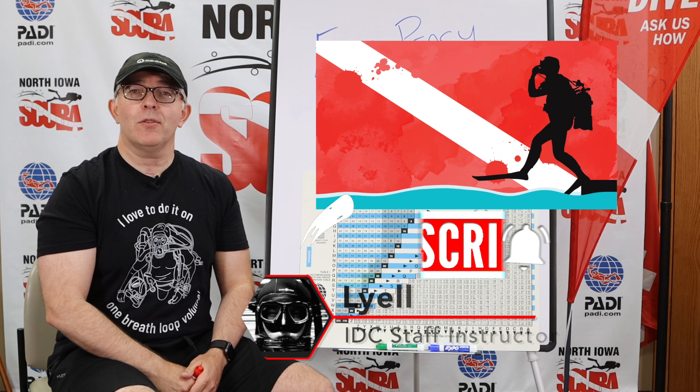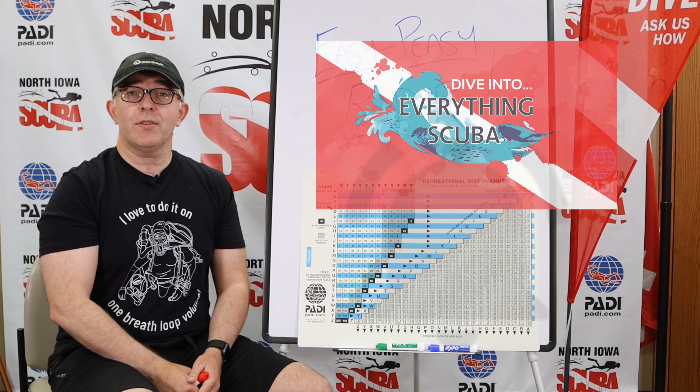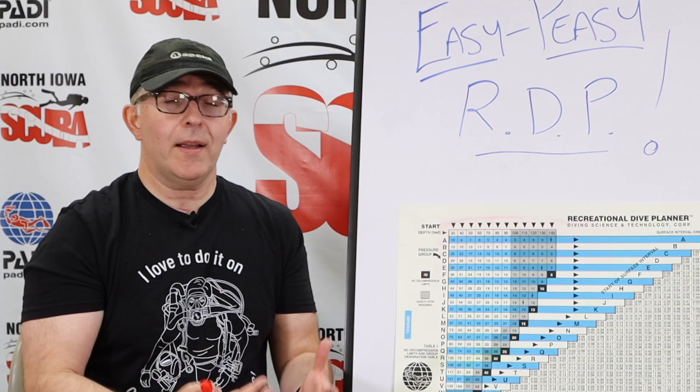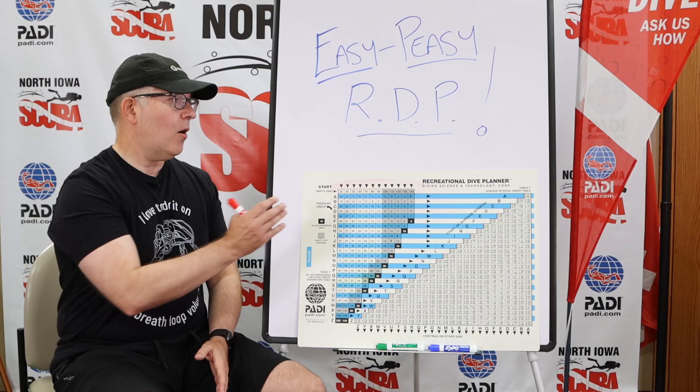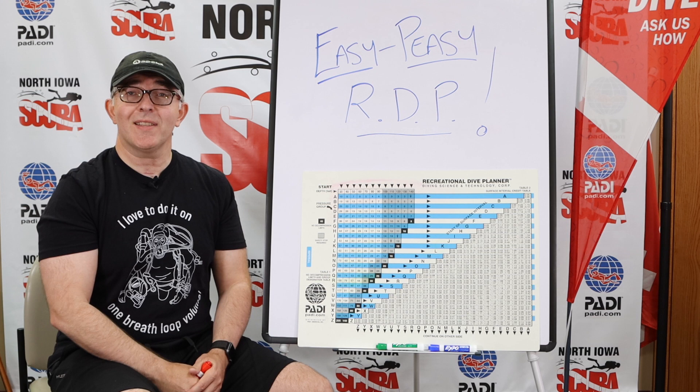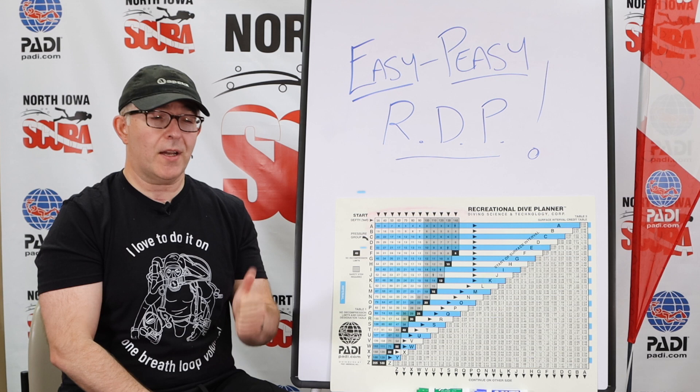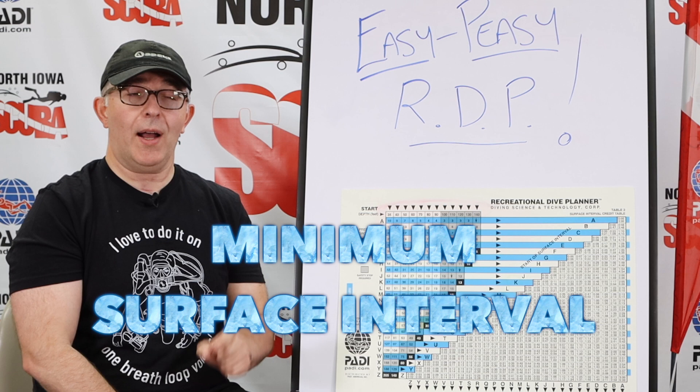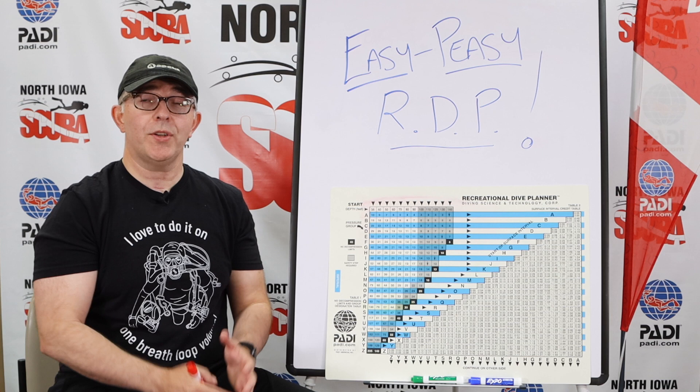I am Lyle. This is part three of our RDP series that we've put together for new divers or divers who are struggling to learn their RDP. You're going to be asked lots of questions during your open water certification written exams all about the RDP, and we're trying to make this as easy as possible for you. In the next five minutes or less, we are going to cover two basic areas: adjusted non-decompression limit, or ANDL, and minimum surface interval — how do we calculate that minimum surface interval? These are both things that you are generally going to be asked about when you take the RDP section of your exam. So let's get to it.